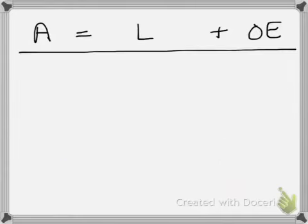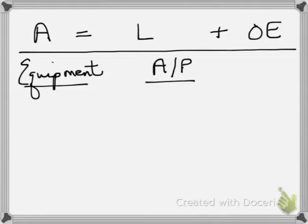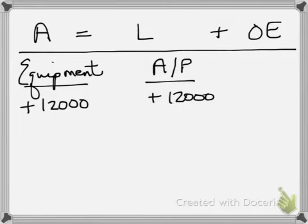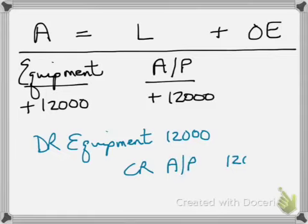The third transaction was the purchase of equipment on account — not paying cash yet, but purchasing on account, assuming a liability — and the dollar amount was twelve thousand dollars. We're going to see that the business has more equipment, so debit equipment twelve thousand dollars, and we have more liability: twelve thousand dollars of accounts payable.